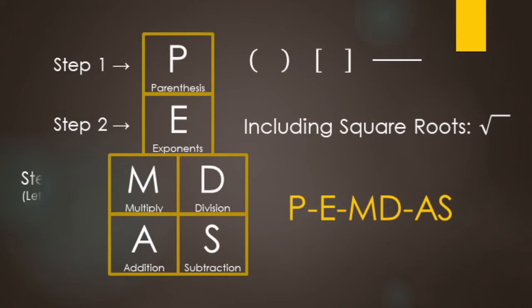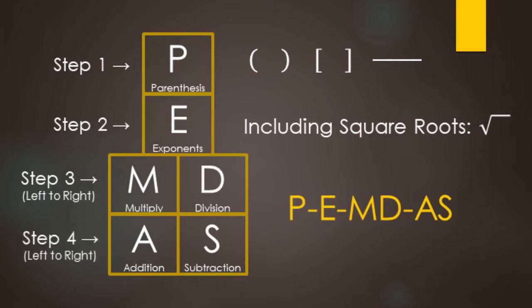Next we do multiply and divide — these are one step, not separate steps, and we do them from left to right. Then last, we finish with addition and subtraction. Again, this is one step — addition and subtraction together — and it's from left to right.